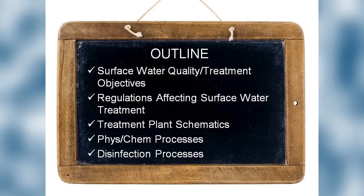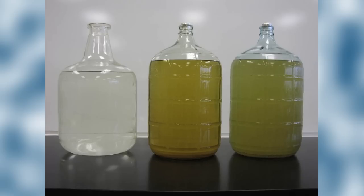Most of you have had some experience observing surface water. I've been privileged to work with several different surface waters in Minnesota, North Dakota, and South Dakota. Here are three different water samples from South Dakota: the one to the left is from the Missouri River Reservoir — the Oahe Reservoir near Pierre. The one in the middle is the Elm River near Aberdeen. And the one to the right is the Big Sioux River near Sioux Falls. Which one do you think would be the easiest to treat?